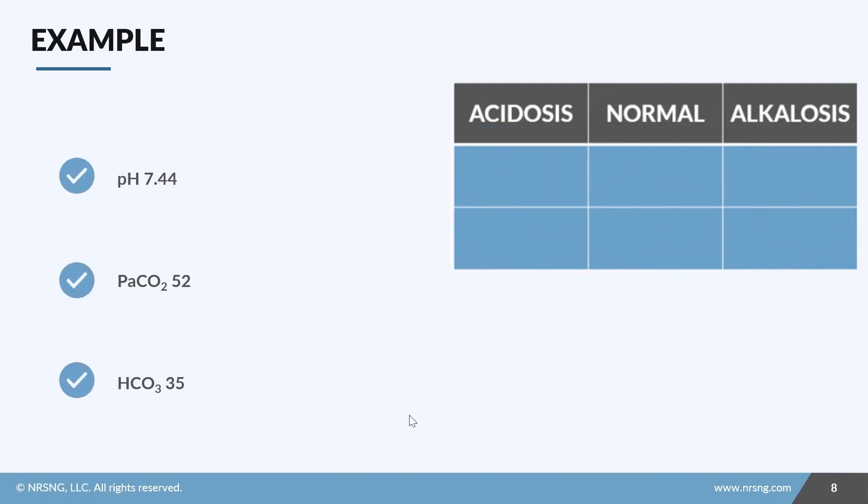Okay, let's look at our last one. You can probably guess what this one's going to be because we've done it a few times already. Step one, pH of 7.44, that is normal. CO2 of 52, that is acidosis. And a bicarb of 35 is alkalosis. Now, this is the one time I'm going to skip to step three because I want you to see our trick. If you see a straight line all the way across with a normal pH, you know that whatever it is, it is fully compensated. Okay?